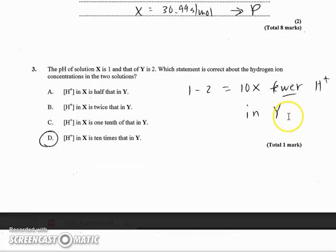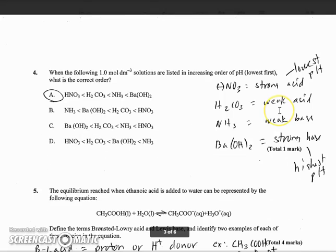Moving on to number 3, the pH of solution X is 1, that of Y is 2, which statement is correct about the hydrogen ion concentration. Well, it's one unit of pH, so that's a factor of 10, since it's an exponent in the base 10 system. And they want to know X compared to Y. Since X is the 1, X is stronger, so X is 10 times that in Y or D, or Y is 1 tenth. The half has no place in it because pH goes in units of 10.